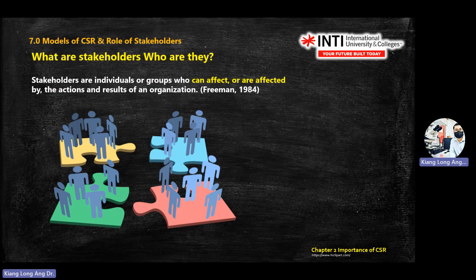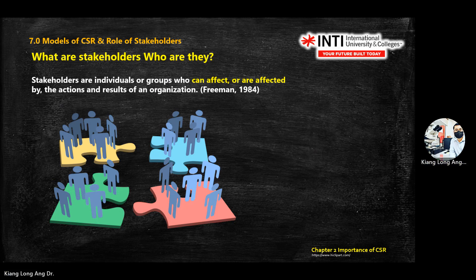There is one question about Freeman. Freeman gives a definition for stakeholders. The key definition to highlight is: anyone that can affect and are affected. The company can affect the community, and the community is affected. Later the quiz question asks you what Freeman defines as stakeholders — look for the keywords 'can affect' and 'are affected.'